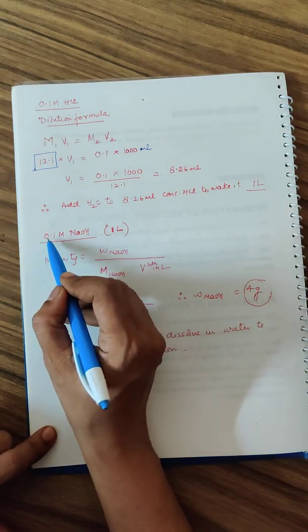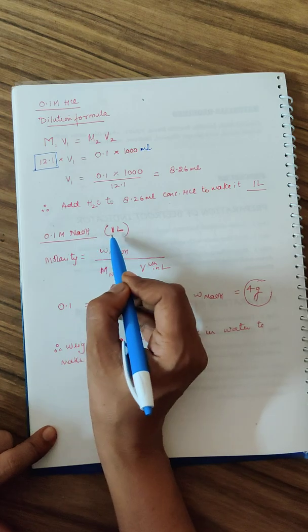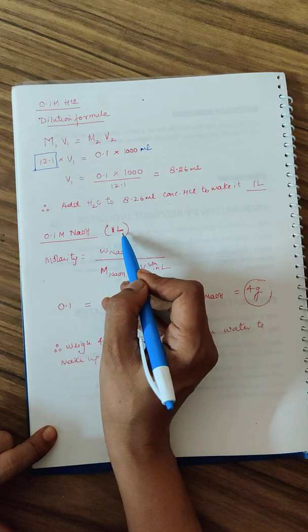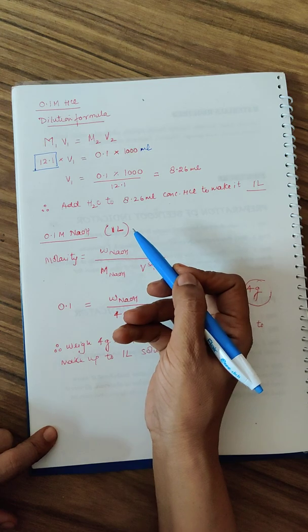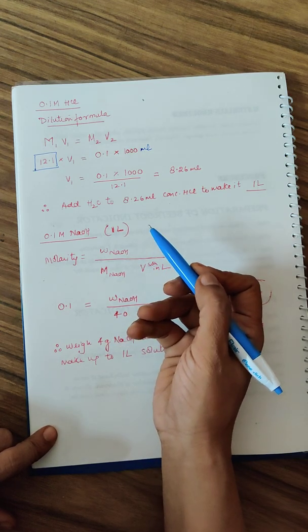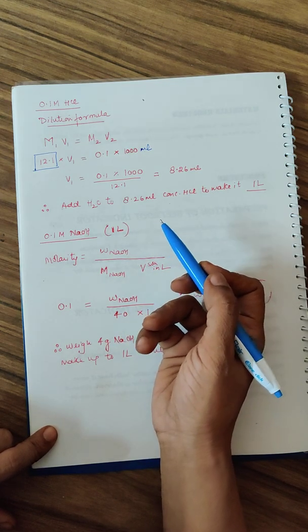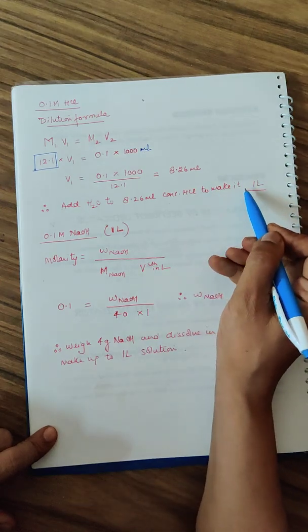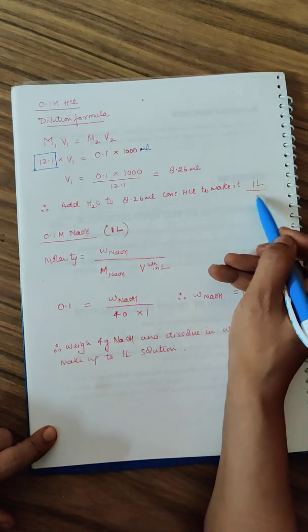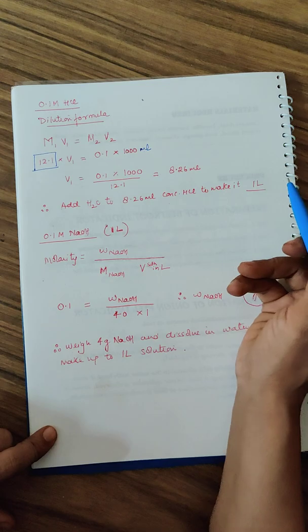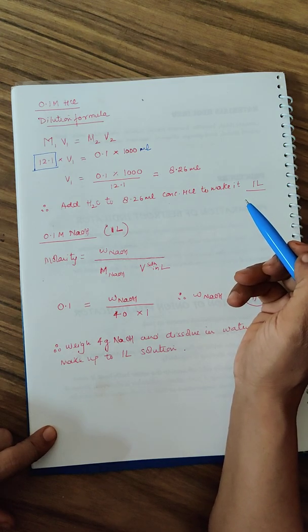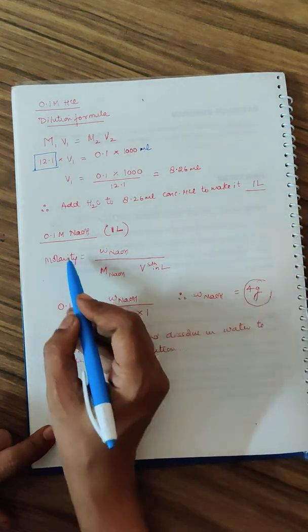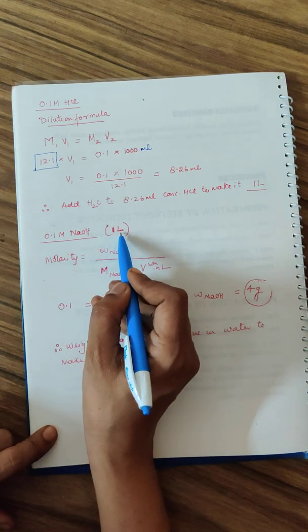Coming to the NaOH that you require, you again require 0.1 molar NaOH, 1 liter of it. There is no harm in preparing slightly excess because you will not keep preparing repeatedly. You can carry your coke bottles and keep these solutions in them in the lab for you to use whenever you do the project work.